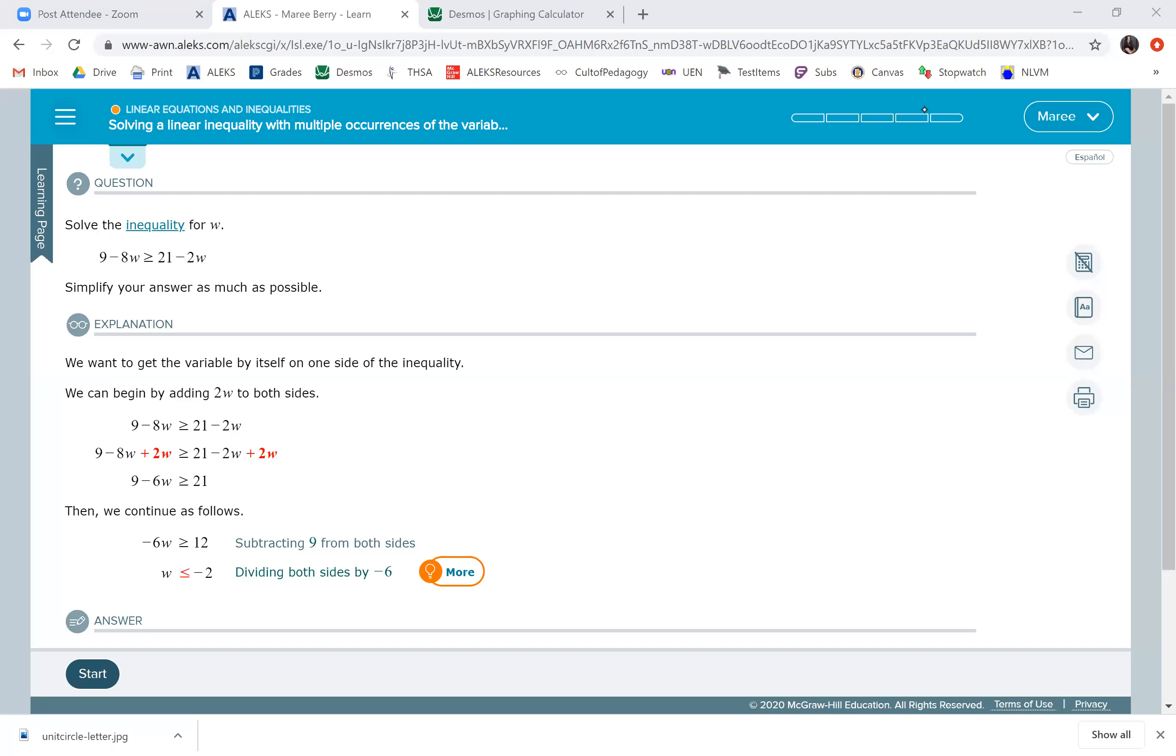On this lesson, you're going to have more than one occurrence of the variable in an inequality. Please remember that if you multiply or divide by a negative number, you have to switch the sign in your inequality.